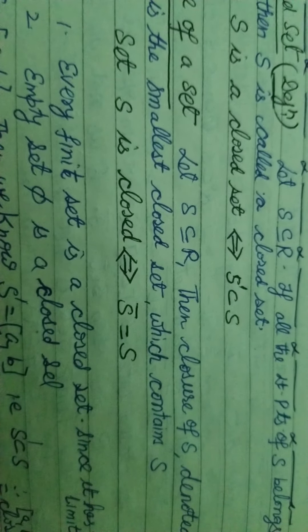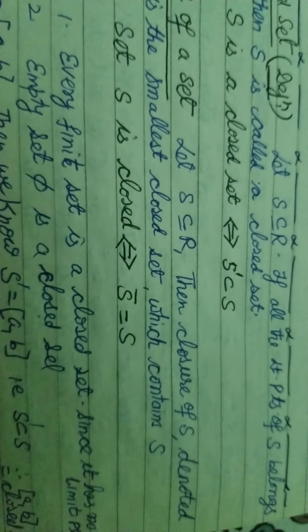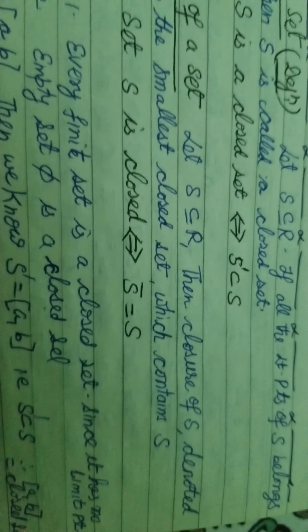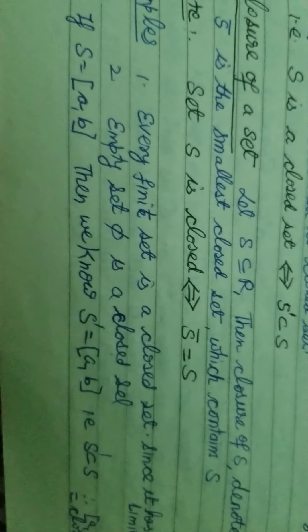The closure of a set: if S is a subset of R, then the closure of S, denoted as S-bar, is the smallest closed set containing S. If S is already closed, then S-bar equals S.